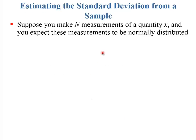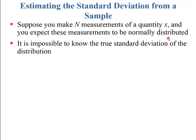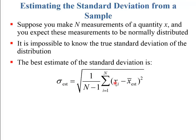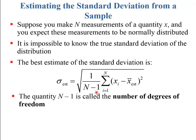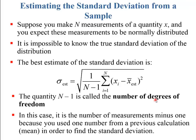You can also estimate the standard deviation of a sample of measurements. The best estimate turns out to be: take each measurement, subtract the mean, and square it; do that n times and sum all those squared differences; divide by n minus 1 (not n); then take the square root. n minus 1 is called the number of degrees of freedom. The reason you use minus 1 is because you already used the estimated mean in the calculation, which decreases the degrees of freedom and gives a better estimate of the standard deviation.